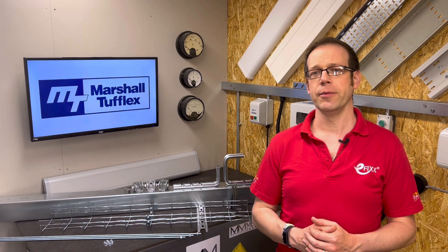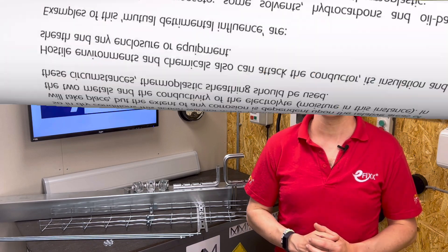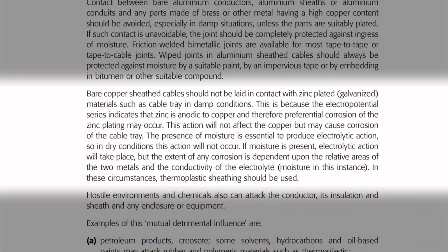There's one other drawback to galvanised steel containment as well. From Guidance Note 1: bare copper sheath cables should not be laid in contact with zinc plated or galvanised materials such as cable tray in damp conditions. This is because the electro potential series indicates that zinc is anodic to copper and therefore preferential corrosion of the zinc plating may occur. This action will not affect the copper but may cause corrosion of the cable tray. The presence of moisture is essential to produce electrolytic action, so in dry conditions this will not occur. In these circumstances, thermoplastic sheathing should be used.